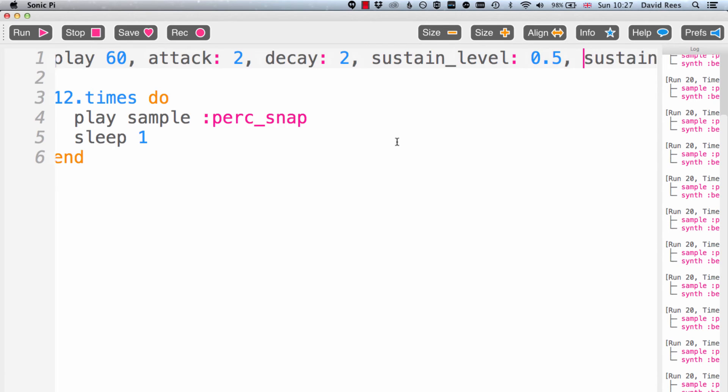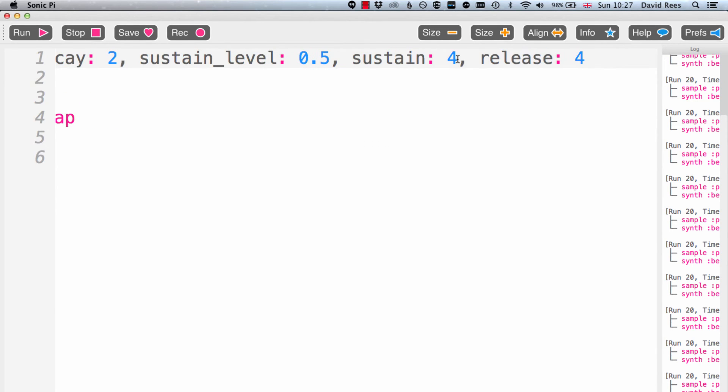Which means that when the note is sustaining over these 4 beats, the volume level or the amplitude will be 0.5 for all of those 4 beats. And then we'll be going from 0.5 back to 0 over the course of the release period, which is 4 beats again.